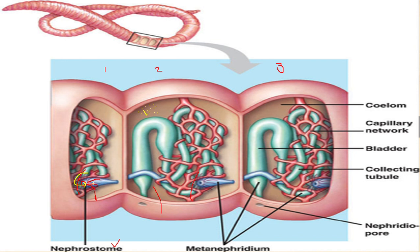Moving from the nephrostome, the water along with metabolic waste moves into the collecting duct. The collecting duct is also surrounded by a network of capillaries. This network of capillaries performs the same function previously studied in the human kidney — surrounding the loop of Henle — and helps in the reabsorption of salt and excess water. So the capillaries in the earthworm perform the same reabsorption function.